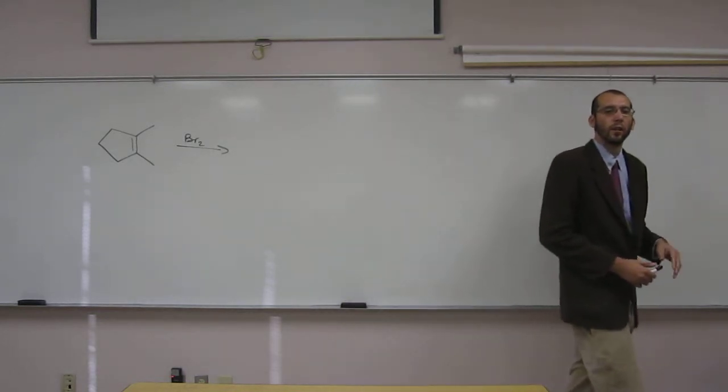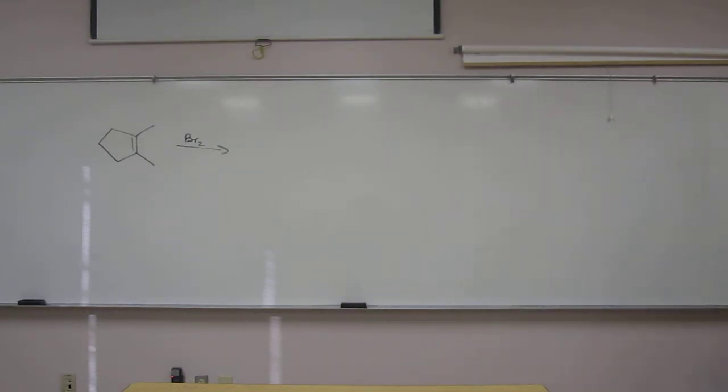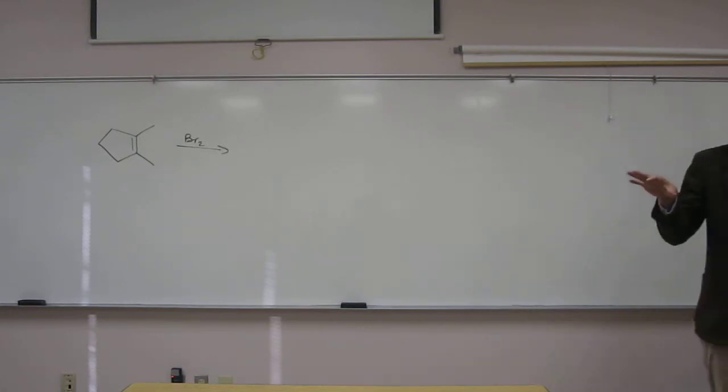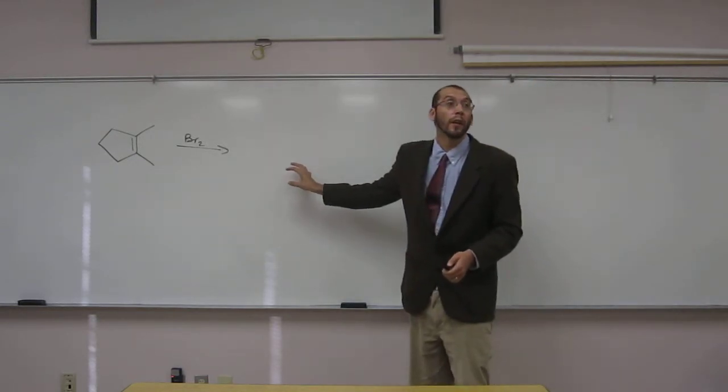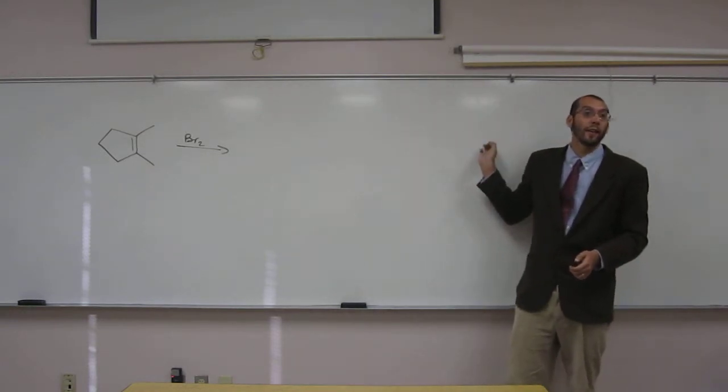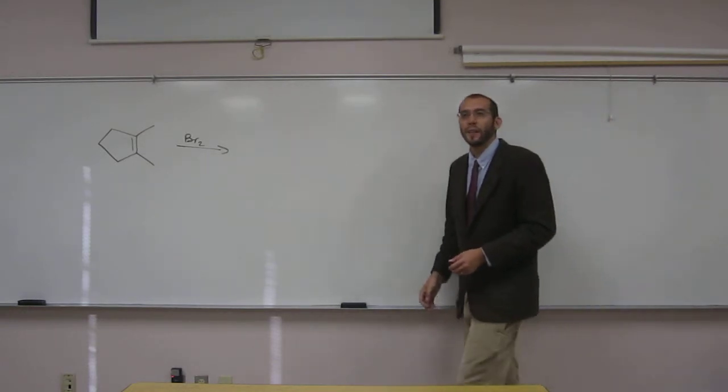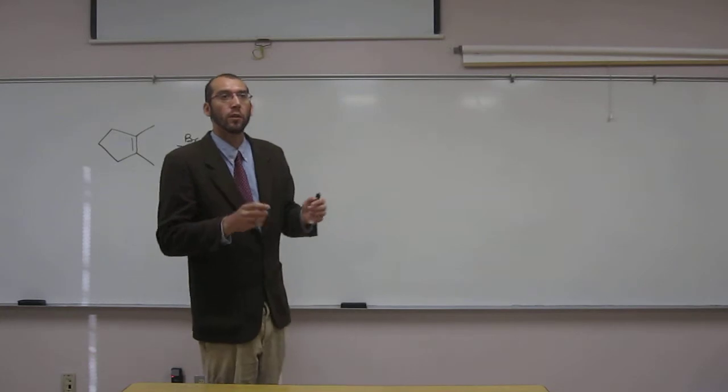Do you guys remember what the name of the type of compound we're going to make over here is? Hydrohalogen. No, we haven't done that reaction. That's going to be the intermediate, the bromonium ion intermediate, and then we're going to make a dihalide. So it's an alkyl halide, but with two halogens.